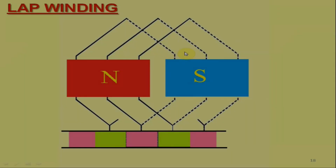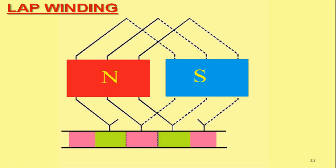This figure shows a simple lap winding where one can notice that the end of each coil is connected to the start of the adjacent coil, and the two ends of each coil are connected to the adjacent commutator segments. Moreover, in lap winding, the coil ends are bent inwards. Also, you may observe that each successive coil overlaps the preceding coil. Hence, the name of this winding is lap winding.